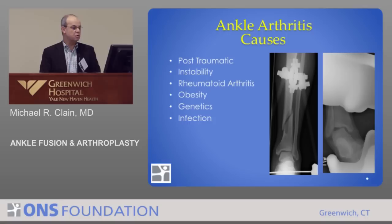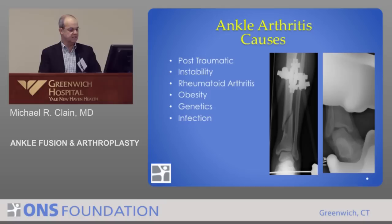The causes of ankle arthritis — when you think about the joints in the body that get joint replacements, you're talking about hips, knees, probably shoulders, then you fall into much smaller categories, which would be ankles, elbows, wrists, things like that.